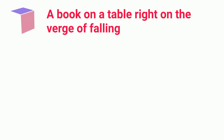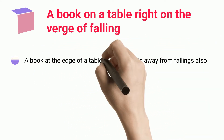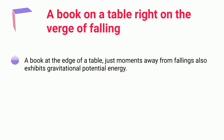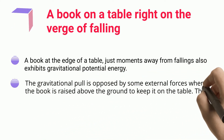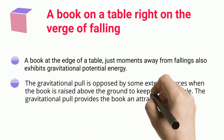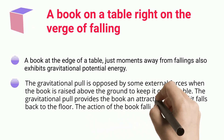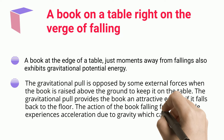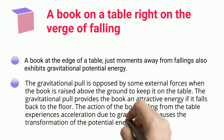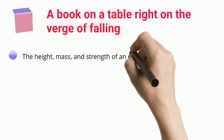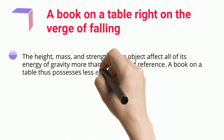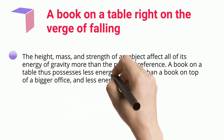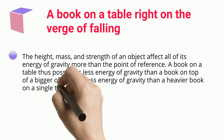A book at the edge of a table just moments away from falling also exhibits gravitational potential energy. The gravitational pull is opposed by external forces when the book is raised above the ground. If it falls back to the floor, the book experiences acceleration due to gravity, causing the transformation of potential energy into kinetic energy. The height, mass, and strength of an object affect its gravitational energy relative to the point of reference.